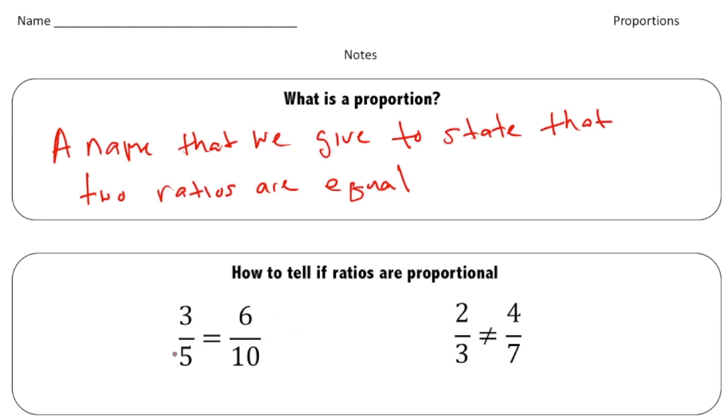For example, here we have three fifths and six tenths, and the way you can tell that these fractions are equal is if you cross multiply. So if I do three times ten I get thirty, and if I do six times five I get another thirty. Because the cross products are the same, you know that those two fractions are equal.